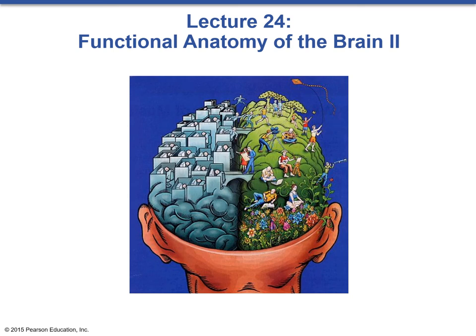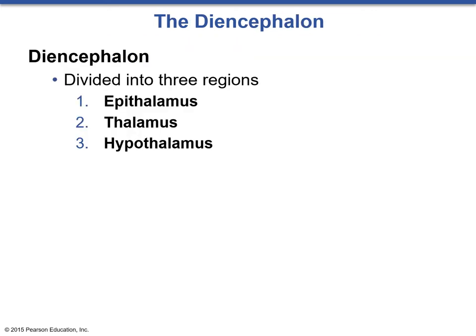This is lecture 24 on the second part of the brain and the functional anatomy of the brain. Picking up where we left off from lecture 23, we'll go into the diencephalon. Remember that the diencephalon connects the brain stem to the cerebral hemispheres and contains critically important structures such as the hypothalamus.